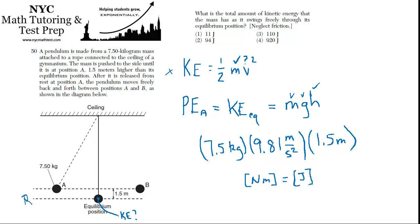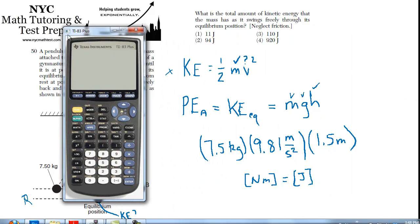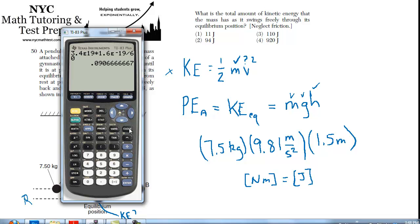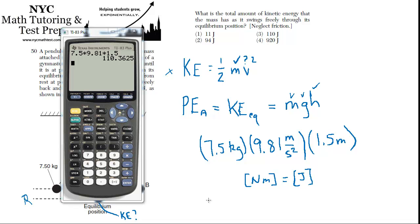So let's find out what exactly that number is, and we'll be all set. So we have 7.5 times 9.81 times 1.5. That is 110. So kinetic energy equals 110 joules. Best answer is 3.